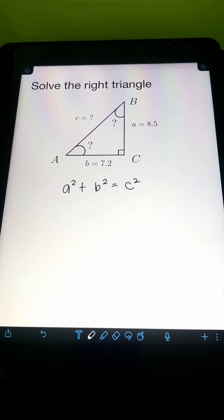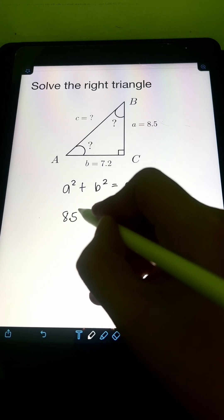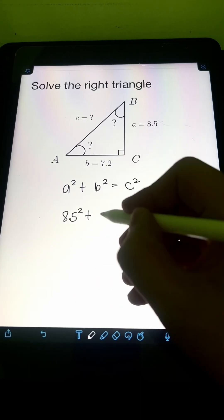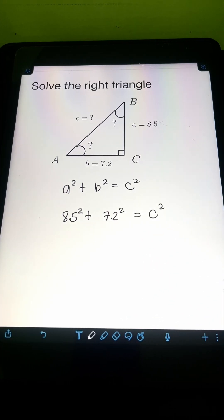So substituting the values, we have A is 8.5. So we have 8.5 squared plus B, that's 7.2. So we have 7.2 squared equal to C squared.